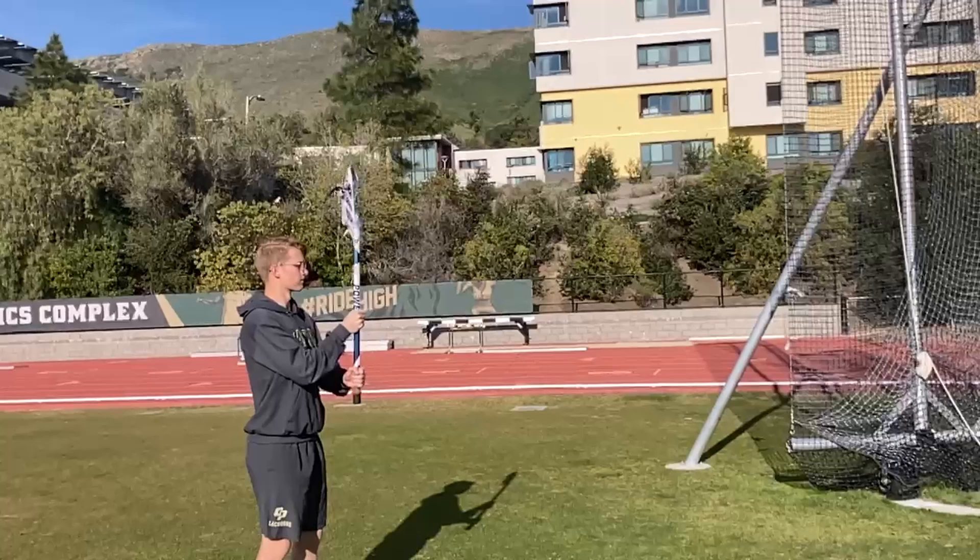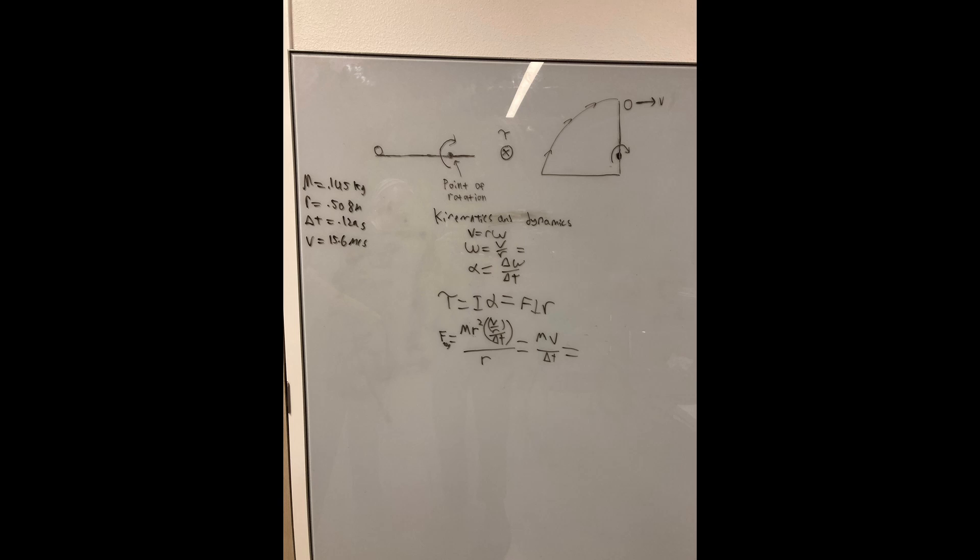Here we have a rough depiction of a lacrosse ball being thrown by a lacrosse stick. As you can see, it is rotating in a circular arc around a point on the stick and is released at the top of the arc.